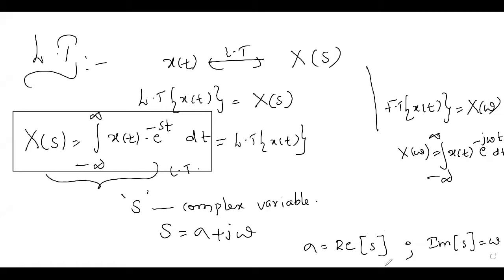Introduction to Laplace Transform: Using Laplace Transform, the time domain signal is changed to the S-domain, represented as X(S). The formula converts it into S-domain by multiplying the signal with the kernel e^(−St). S is a complex variable having a real part σ and an imaginary part ω, represented as S = σ + jω.